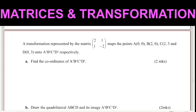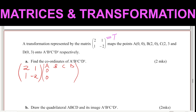Now let's go to the first part. We need to get the coordinates of A', B', C', D'. We simply take the matrix of transformation — we can call this matrix T — which is 2, 1, 1, negative 2, and then multiply it with the coordinate matrix of A, B, C, D. The matrix of transformation should come first (pre-multiply). So we have A(0,0), B(2,0), C(2,3), D(0,3).